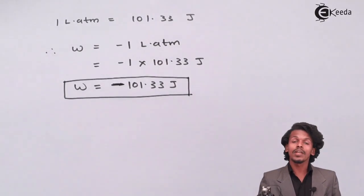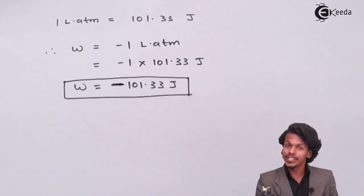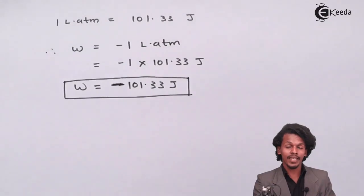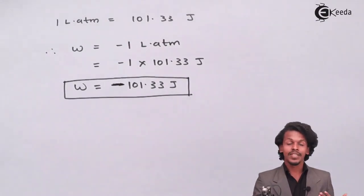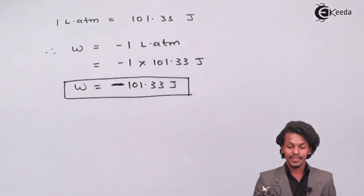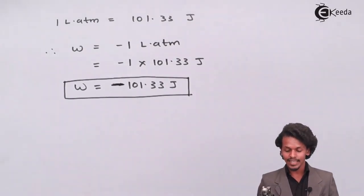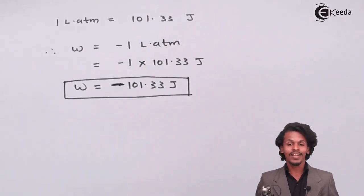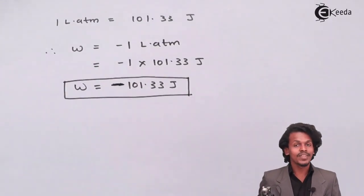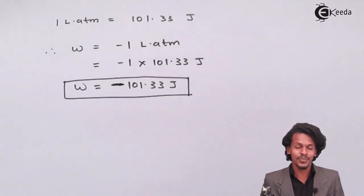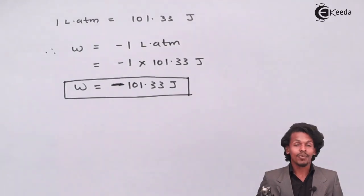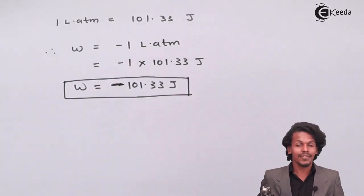The minus sign indicates work done by the system on the surroundings — when the system does work, the value is negative. So the answer is W = −101.33 Joules.